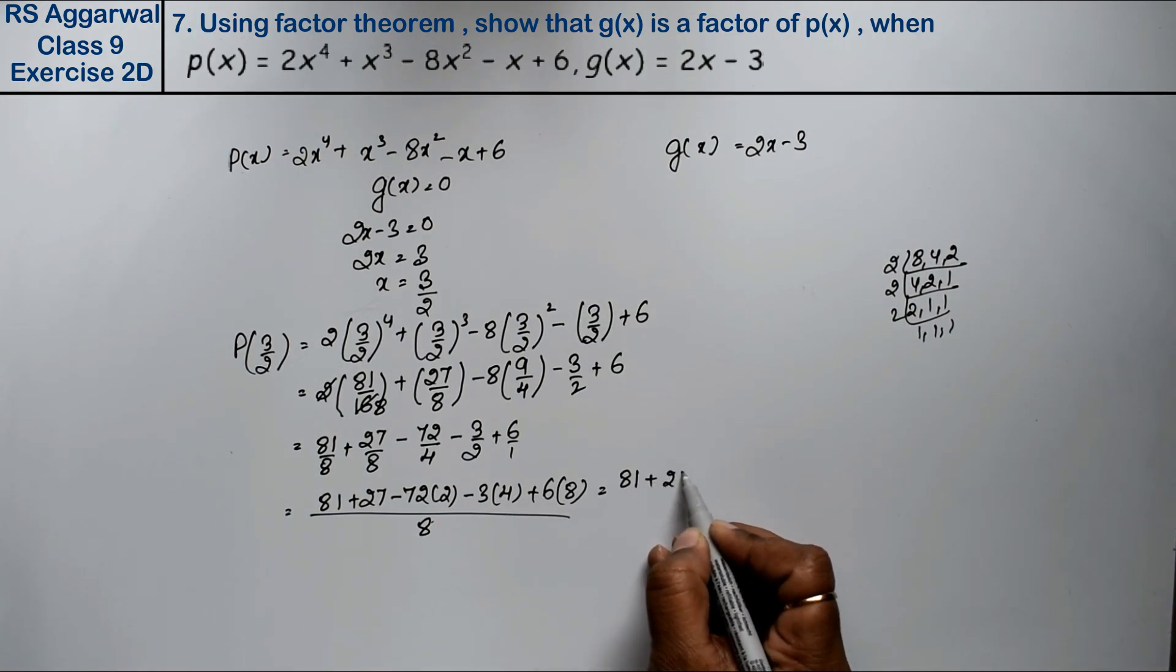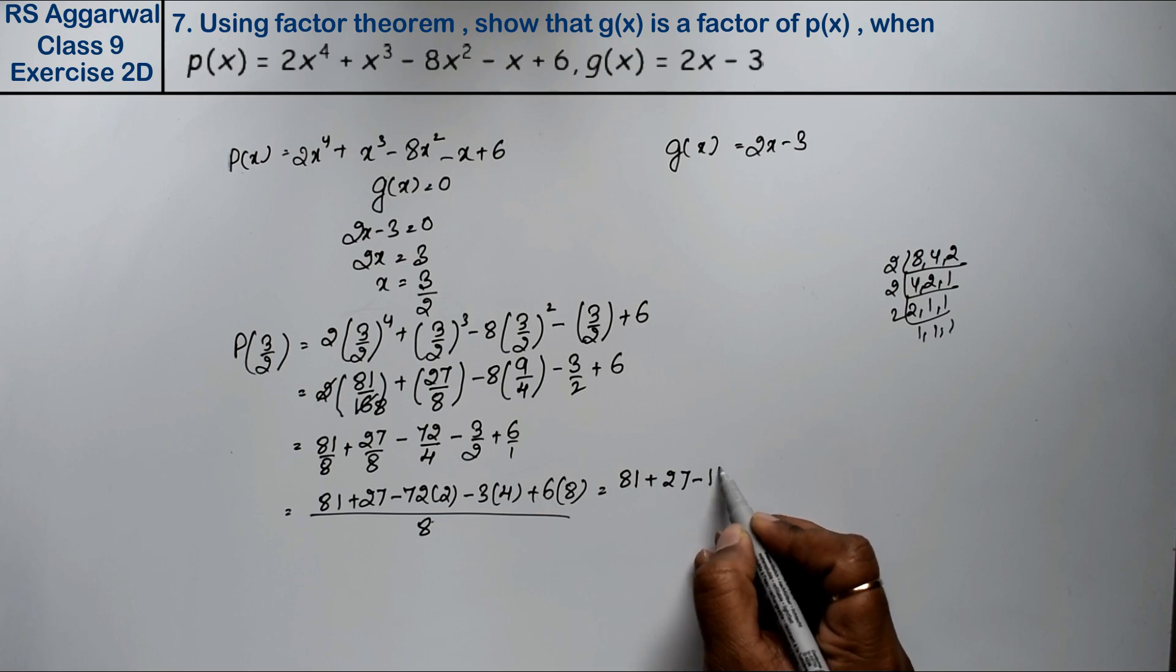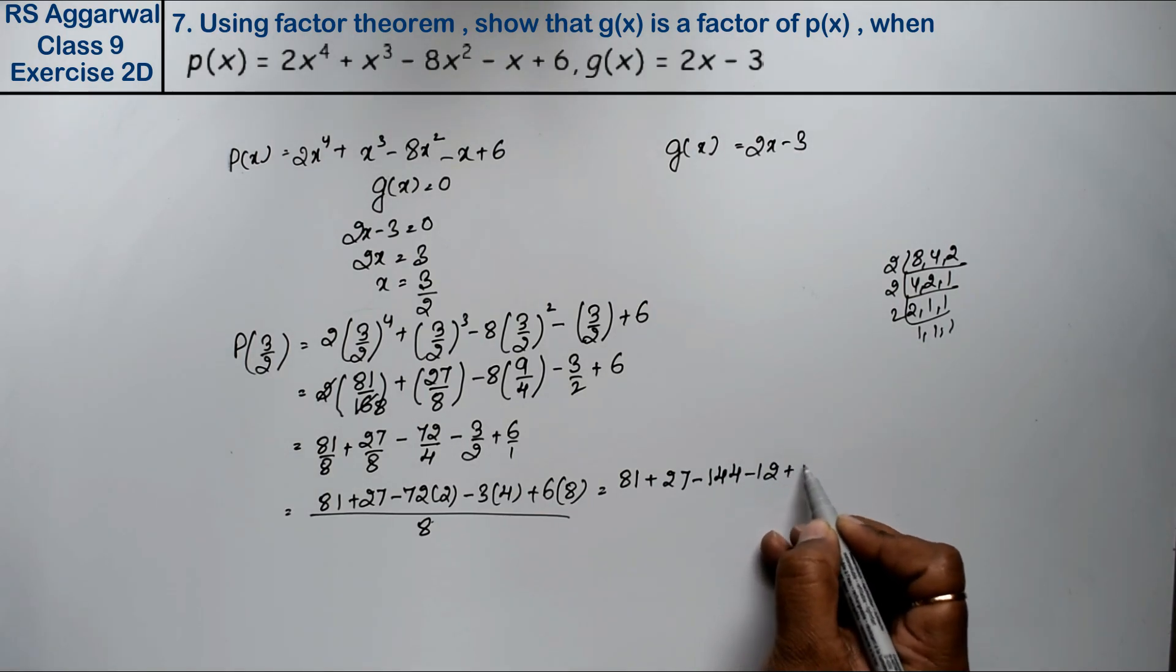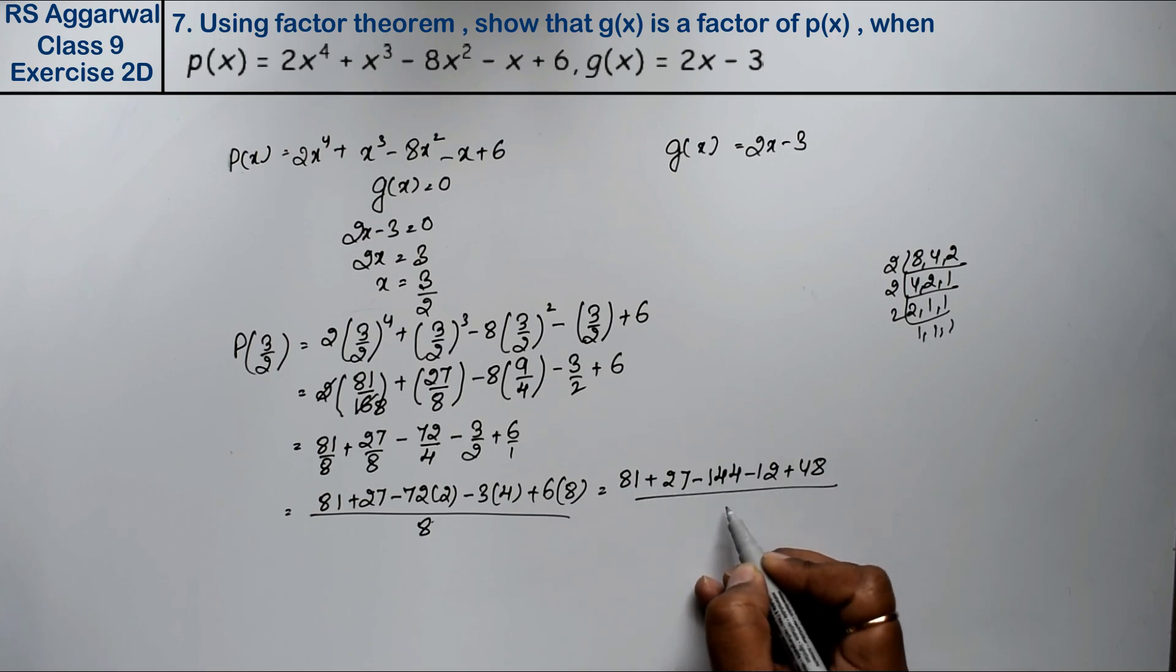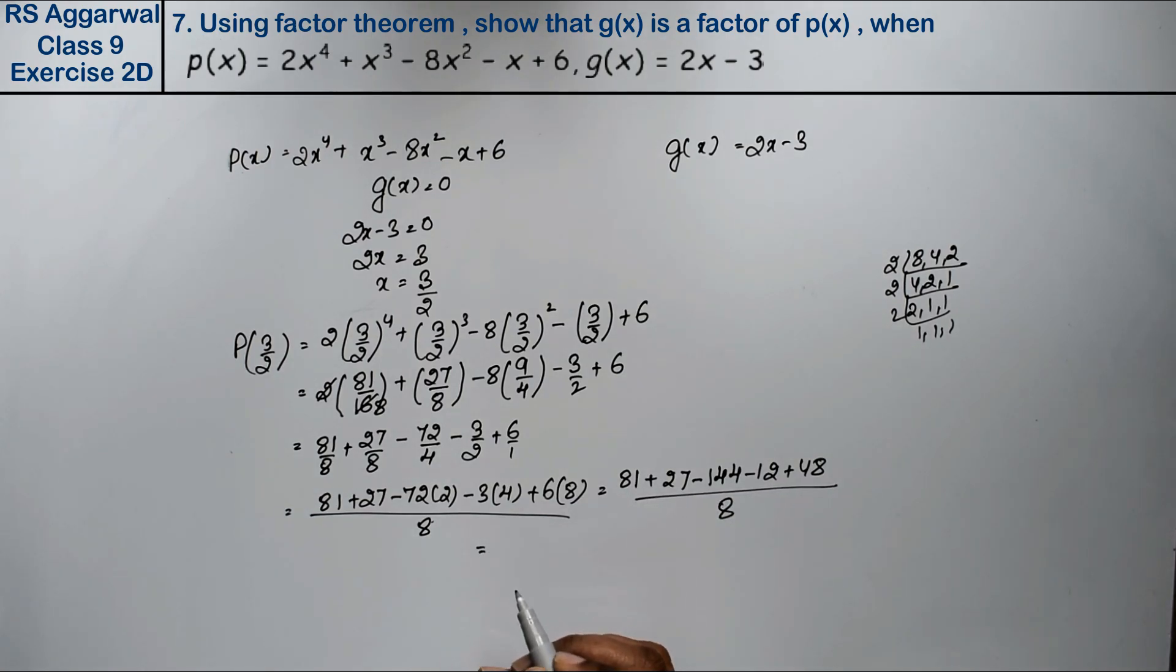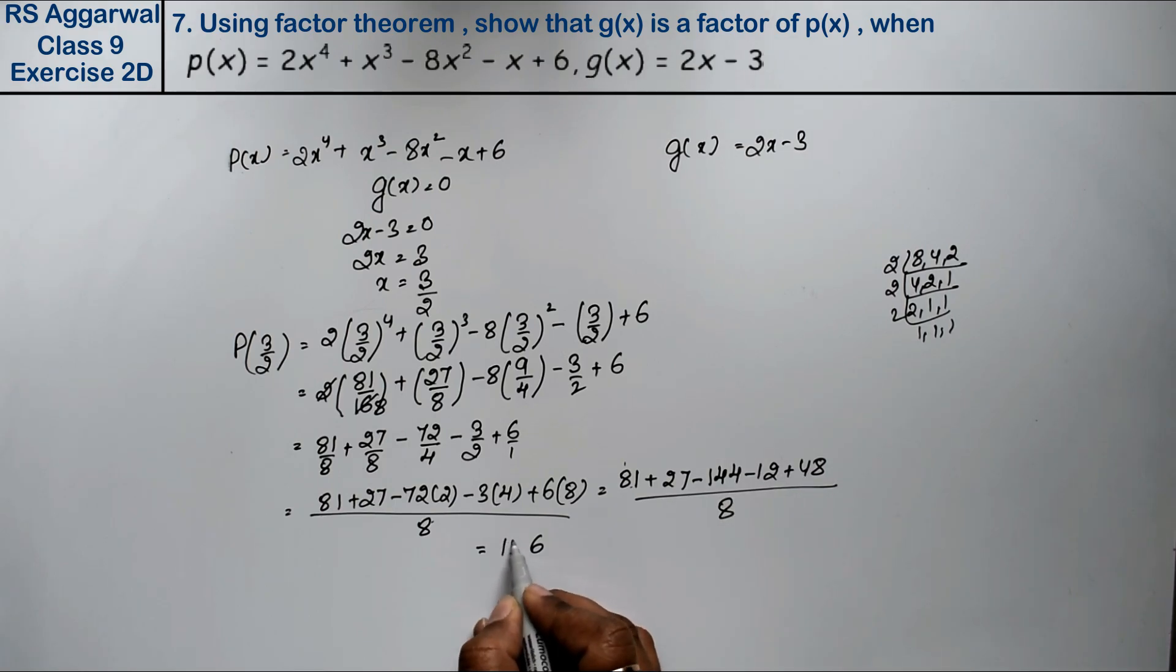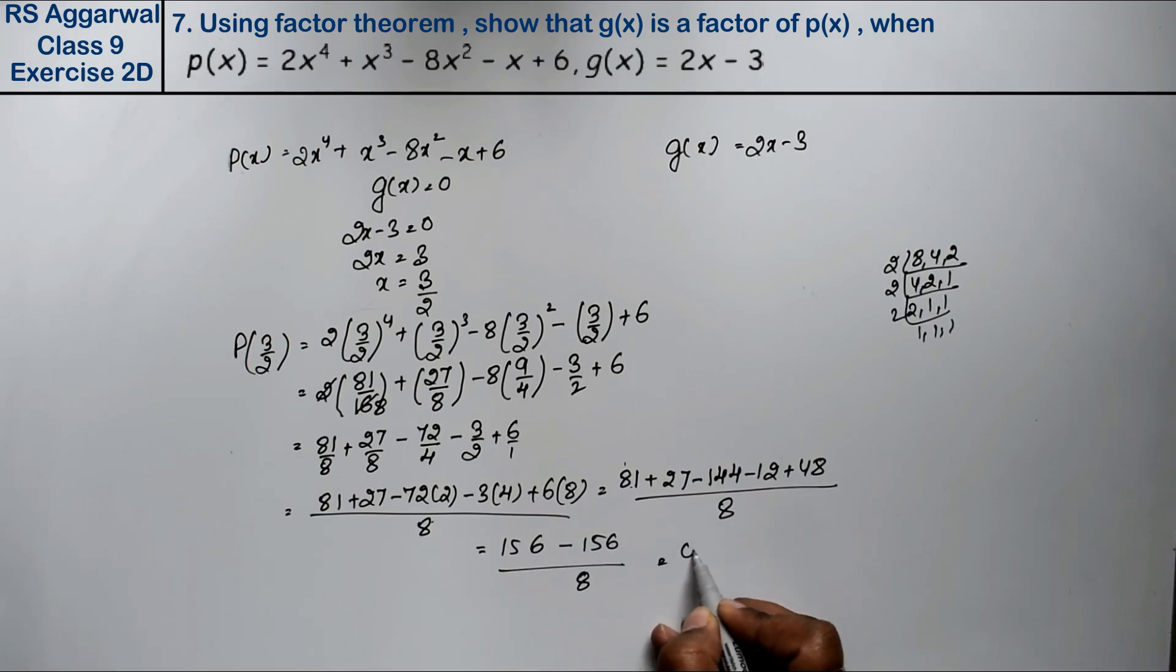What did this become? 81 plus 27 minus 2 times 2 is 44 minus 12 plus 48 upon 8. Now we'll add all the positive terms together. See, 8 and 8 is 16, carry 1, 9, 10, 11, 12, 13, 14, 15. We'll add the negative terms together. 156 upon 8, what did we get? 0.